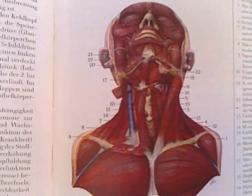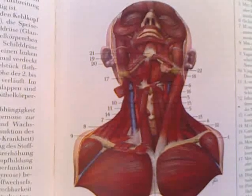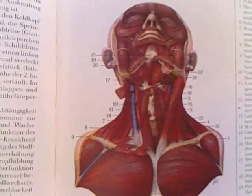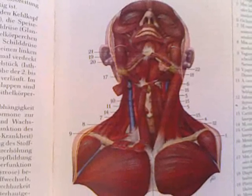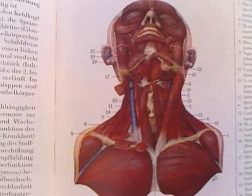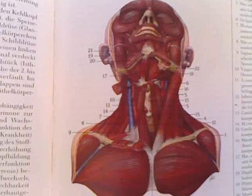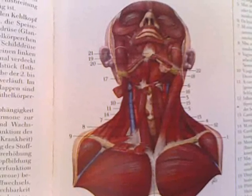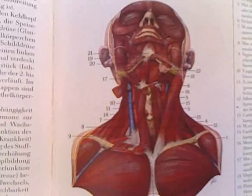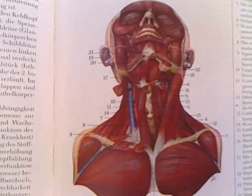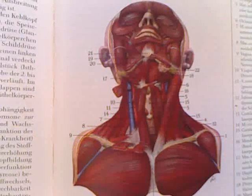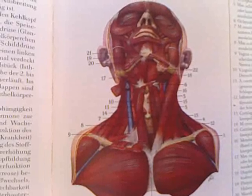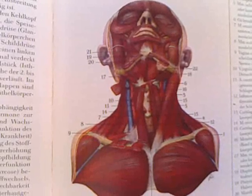Number 18 is the diaphragm of the mouth. Number 20 is the mandible. Number 21 is the chin.